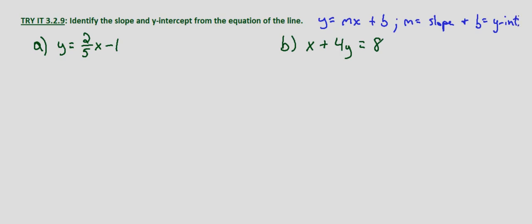So with our first equation we're given y equals 2/5x minus 1. Well that's already in slope-intercept form y equals mx plus b. m in this case is our slope which equals 2/5.